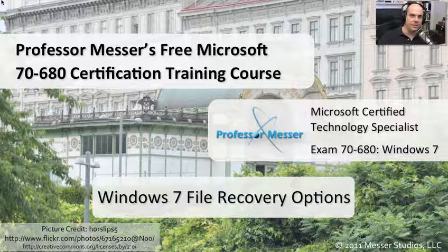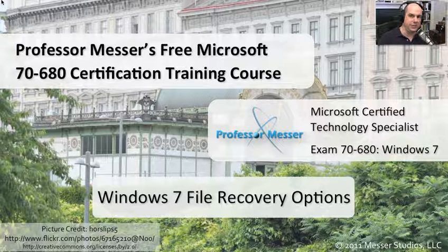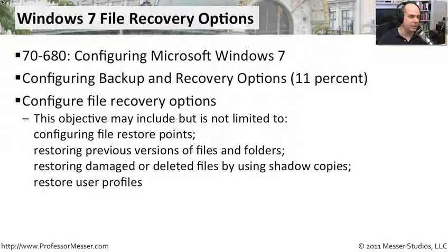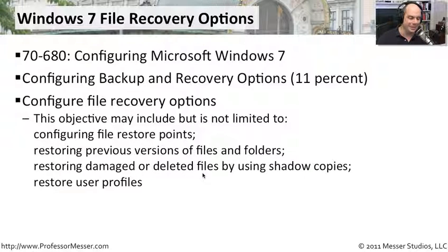Welcome to this module of Professor Messer's free Microsoft 7680 certification training course on Windows 7 file recovery options. I'm James Messer. In this module, we're going to look at the options available for file recovery: how to configure file restore points, restoring previous versions of files and folders, restoring damaged or deleted files using shadow copies, and how to restore entire user profiles.